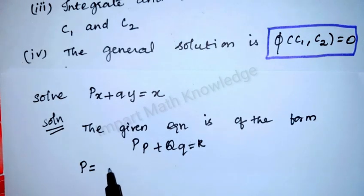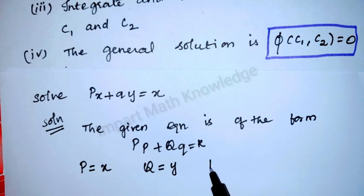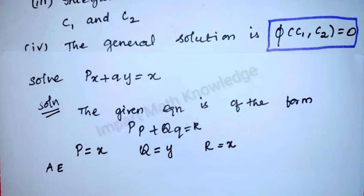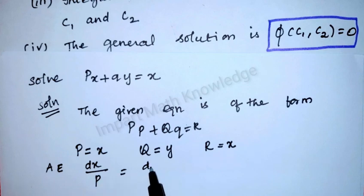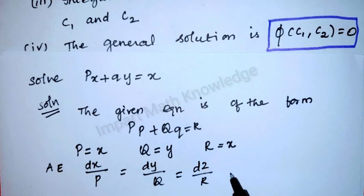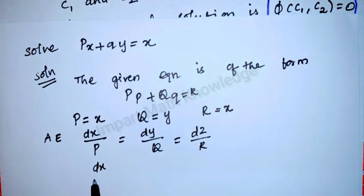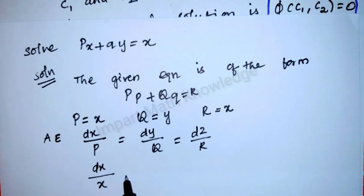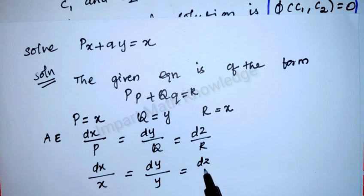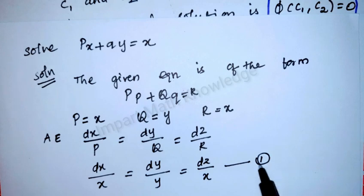Here P = x, Q = y, and R = x (the right-hand side function). The auxiliary equation is dx/P = dy/Q = dz/R, which can be written as dx/x = dy/y = dz/x. Take this as equation number one.